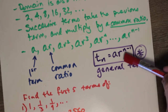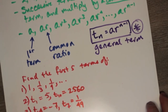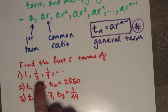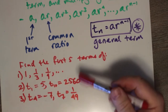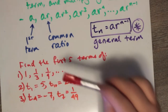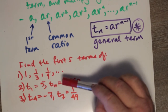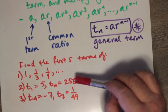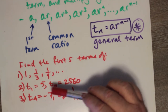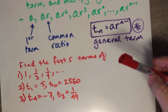Let's try and see if we can work out these three questions. The first is to find the first five terms of a sequence explicitly written out for the first three terms. Number two, t1 equals 5 and t10 equals 2560. Exercise three, t4 is negative 7 and t7 is 1 over 49.